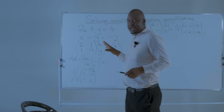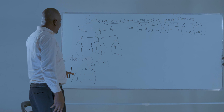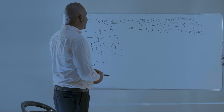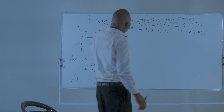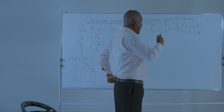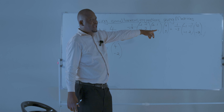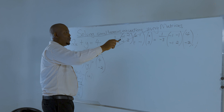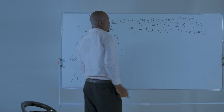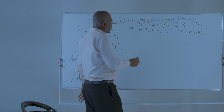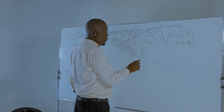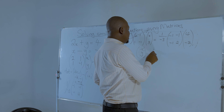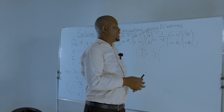We have taken the inverse we calculated and multiplied it on both sides. What we know is that if you take a matrix and its inverse, you get the identity matrix, and the identity matrix multiplied by XY will remain XY — so these ones are going to cancel out.